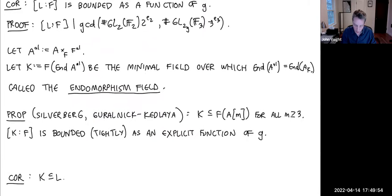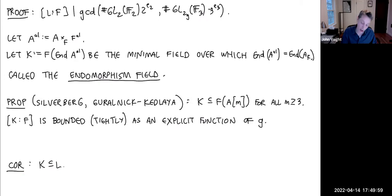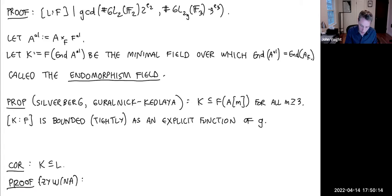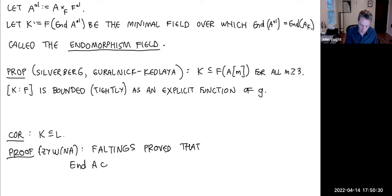The relationship K ⊂ L was visible in the elliptic curve case where K = L. There's another proof via Faltings' theorem: if you take the endomorphisms tensored with Q_ℓ, they inject into the endomorphisms commuting with the Galois action on the Tate representation. Faltings proved that injection is an isomorphism.